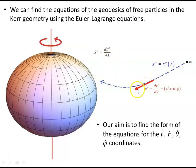The four-momentum vector is also tangent to the geodesics followed by the free particle. Its magnitude — the inner product p·p — equals minus m²c². For the four-velocity, the inner product is minus c². The reason for the minus sign is that throughout this channel I always use the metric signature (−,+,+,+), with the zeroth component being negative.